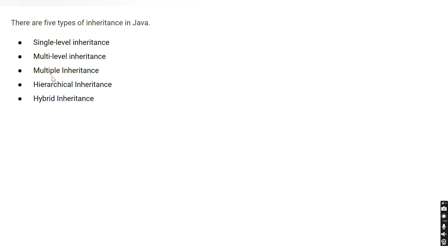We have also learned the five types of inheritance: single-level, multi-level, multiple, hierarchical, and hybrid. In the next video, we will see why multiple inheritance is not supported in Java. That's it for this video — thank you for watching.